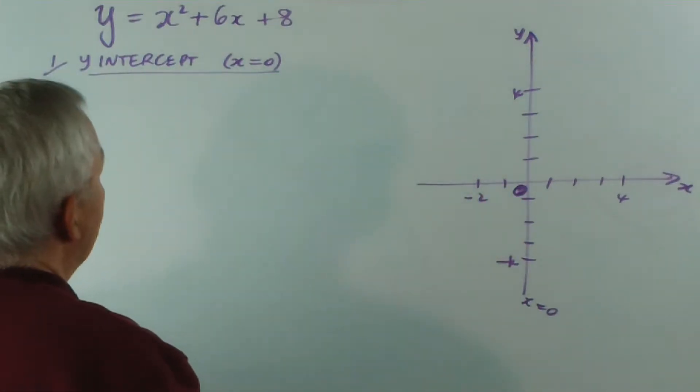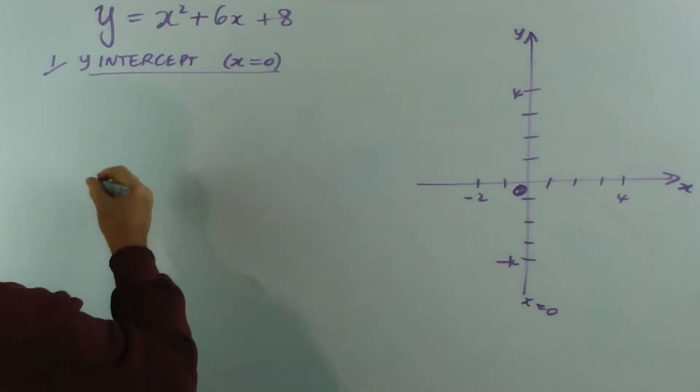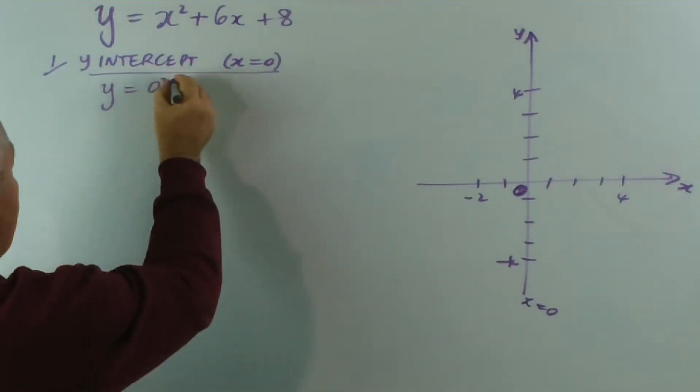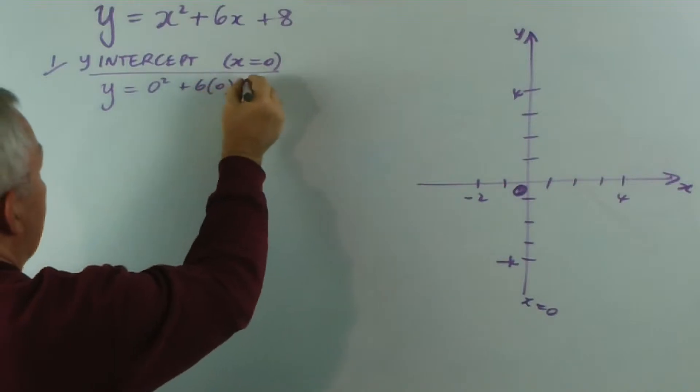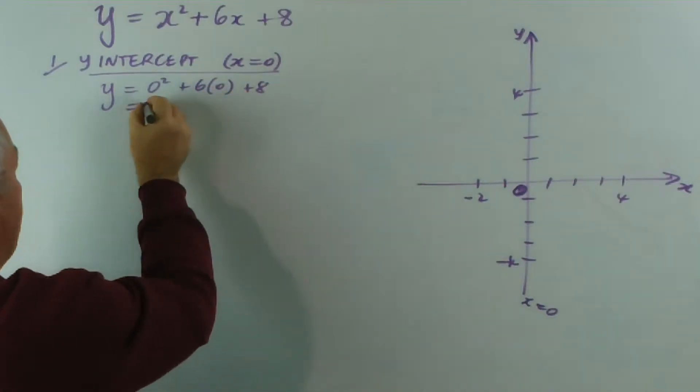Now, if we substitute x equals zero, we get y equals zero squared plus six lots of zero plus eight, which equals eight.